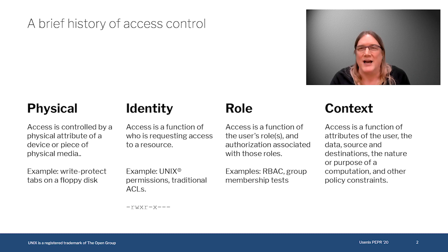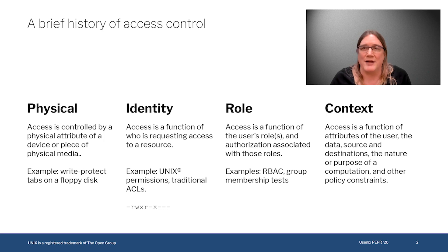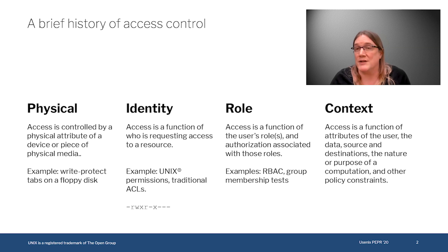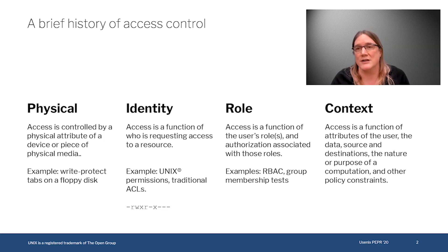Later on, access control started being mediated by identity. A classic example is Unix permissions, where an access decision is made based on who you are, what groups you're in, and what the permissions on a particular file or directory are. This is still pretty simplistic, although it has stood the test of time and is still used pretty much everywhere. Business rules started being applied to access controls with role-based access control, where instead of just identity, access decisions are made as a function of what roles the user has or is assigned and what authorizations are associated with those roles.